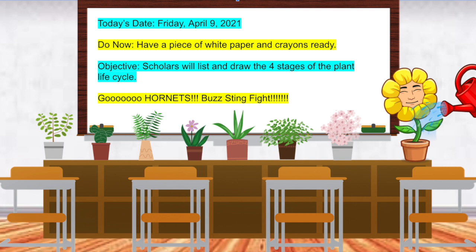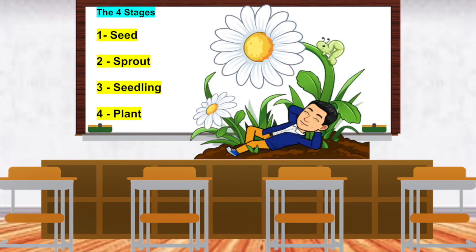Go Hornets! Buzz Sting Fight! We're ready. Alright scholars, before we start drawing, let's name the four stages. Number one: seed. Say seed. Get ready. Yes, seed. During the seed stage, you plant a seed in the ground.